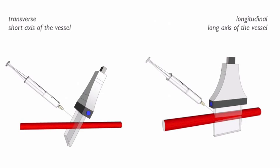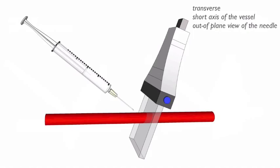Now that we have selected our vein, how do we proceed with cannulation? We can use both transverse and longitudinal planes. Transverse view is used more commonly — in this view veins appear as circles, meaning you are seeing the short axis of the vessel. When describing the ultrasound plane relative to the needle, this is also called the out-of-plane view, because you are not seeing the whole needle shaft but just a cross section that appears as a white dot on the screen. The advantage is that you can easily ensure your needle is directed over the center of the vessel.